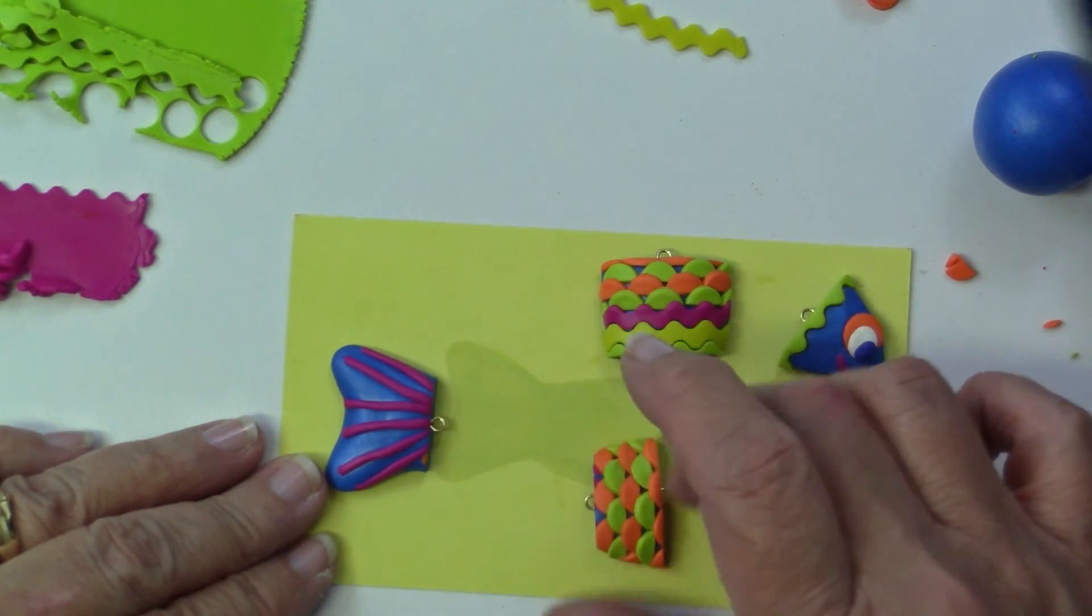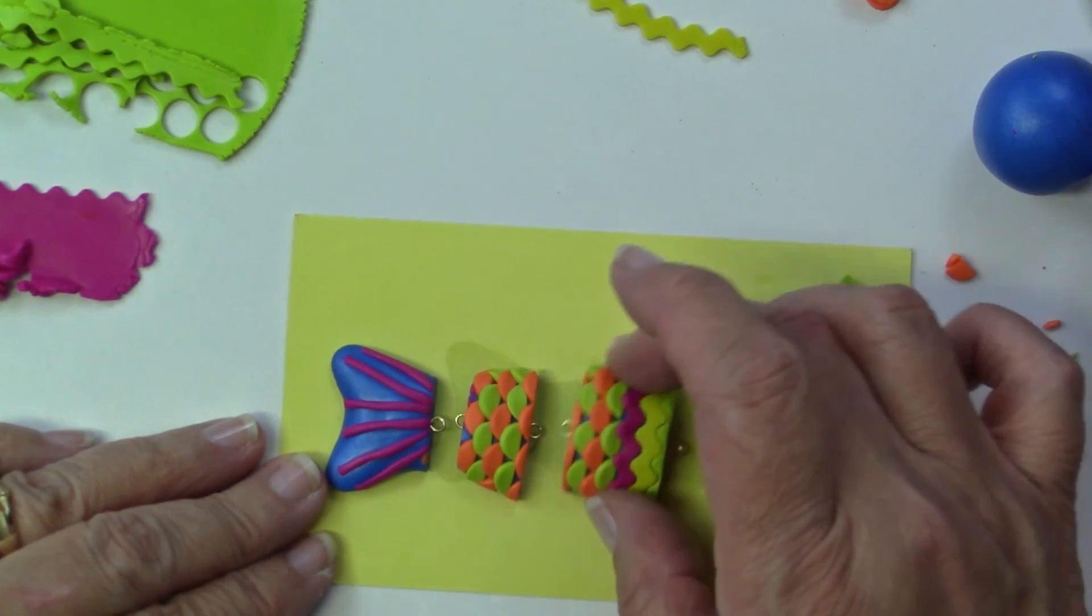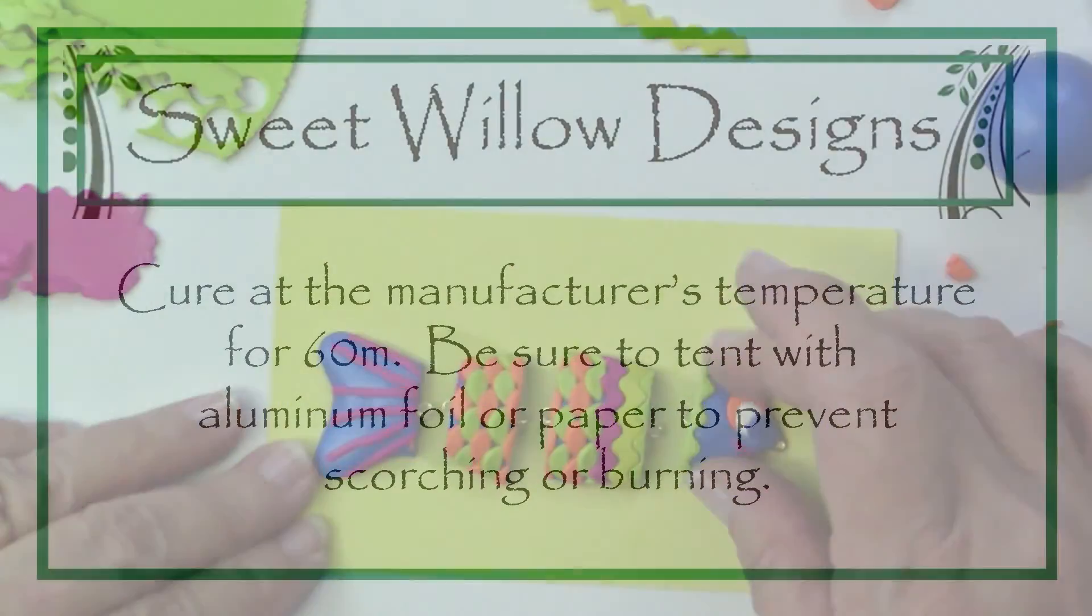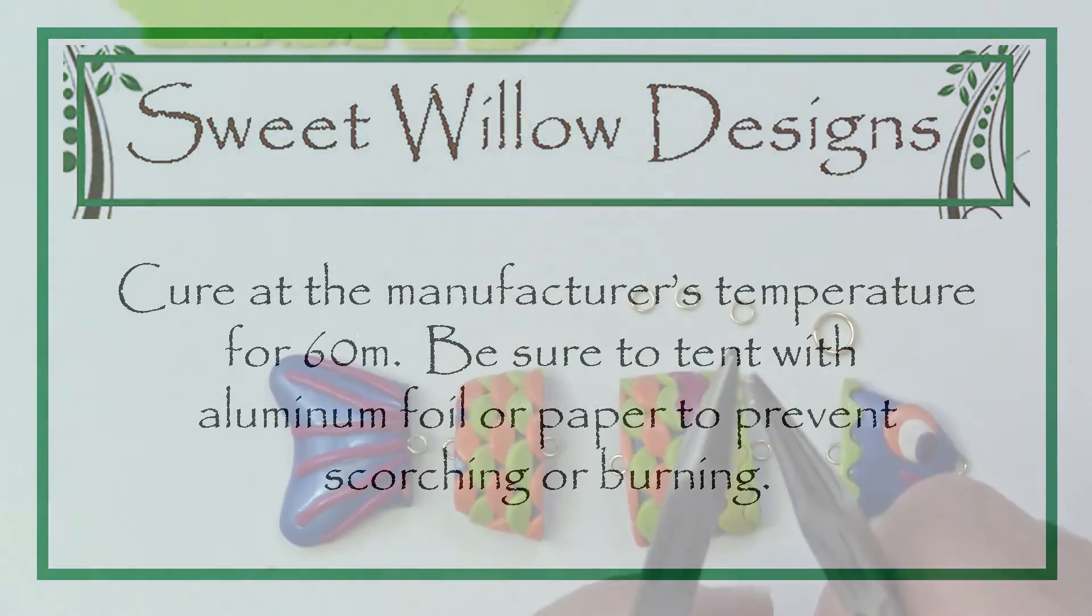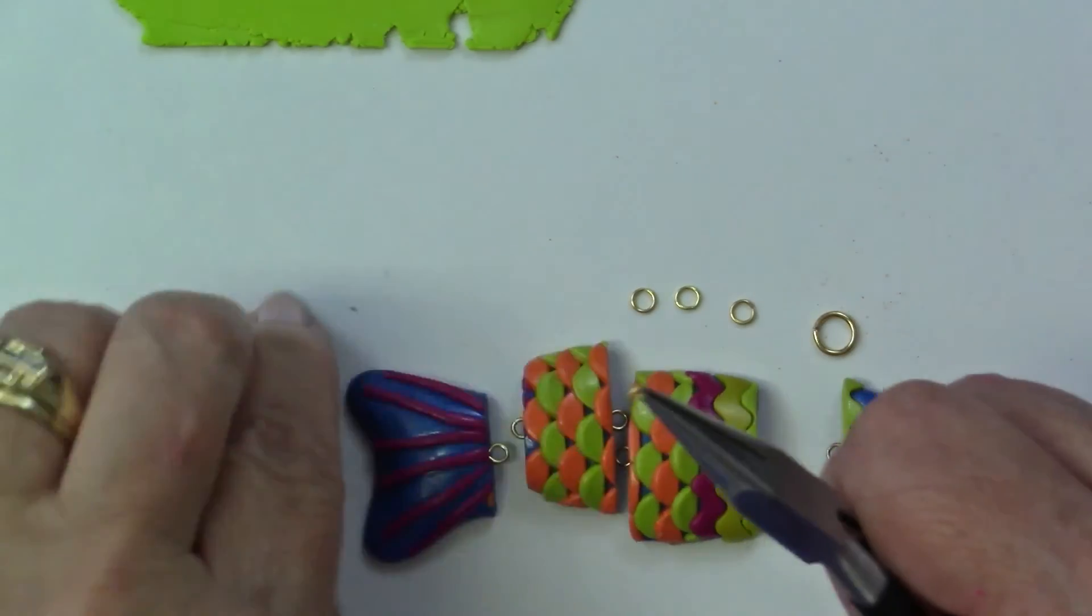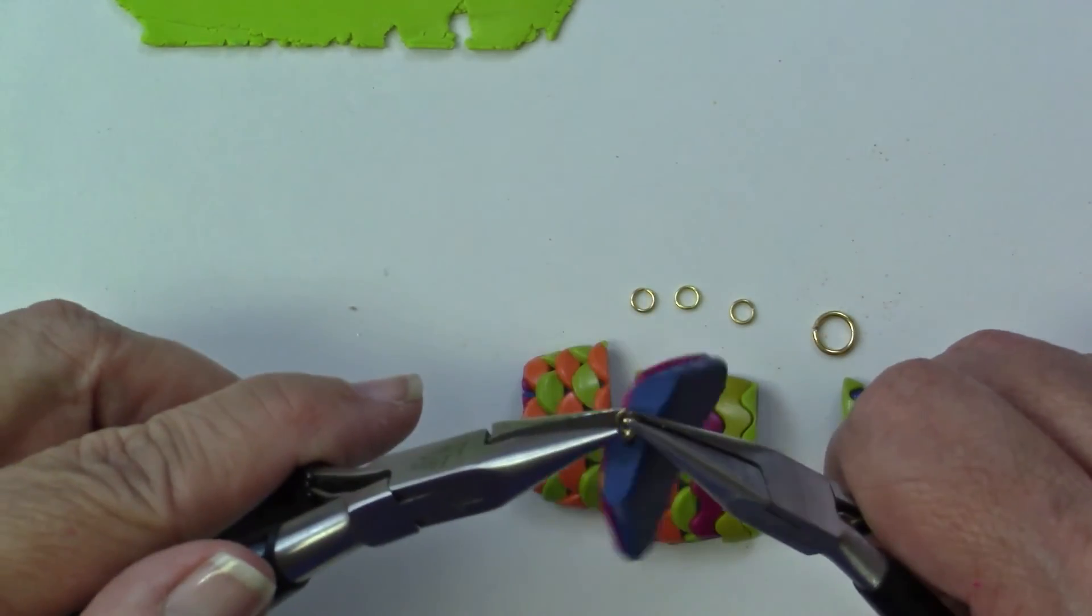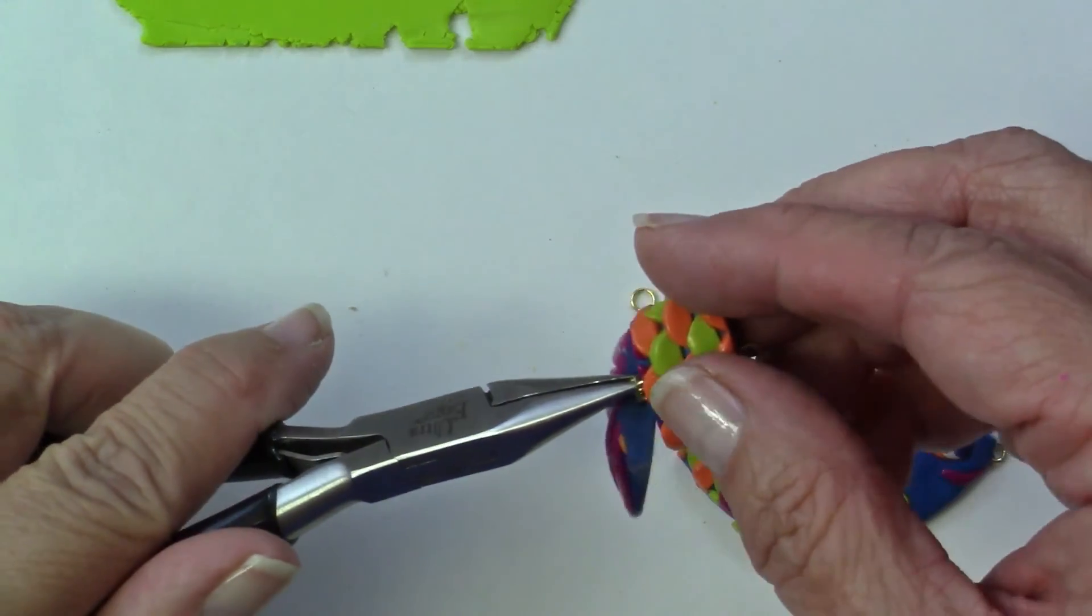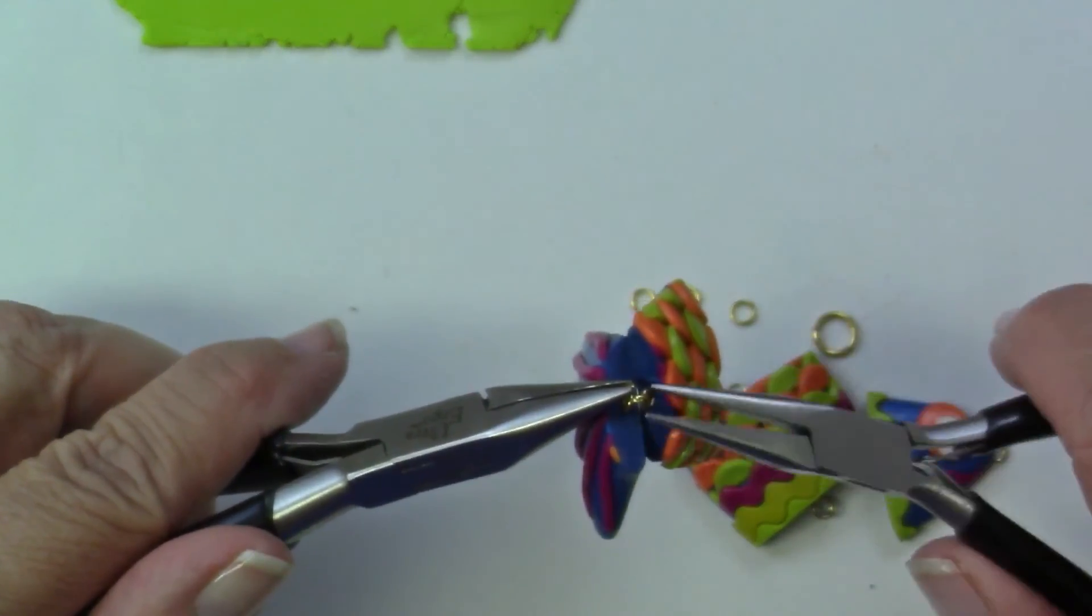And now I've got these pieces all together. I'm going to cure it on the card. And now I'm just kind of trying to remember how it came together and just get it back together. And get that in the oven for 60 minutes and be sure to tent it with aluminum foil or paper or something to prevent scorching. One thing that I did want to mention is after the piece was out of the oven and cooled, I did varnish it with Varithane Gloss to bring out the color and to give it a little bit of shininess. And then I cured that for about 20 minutes.